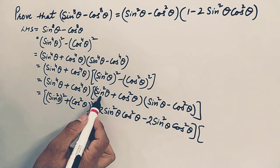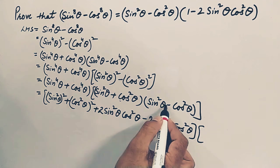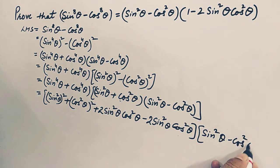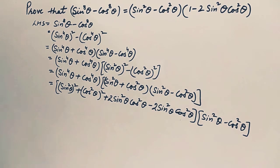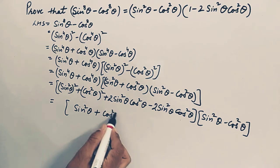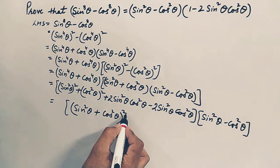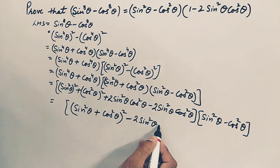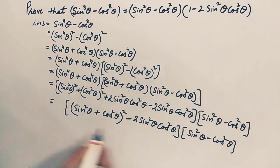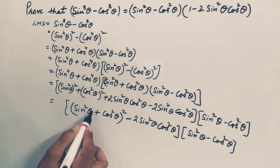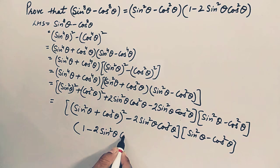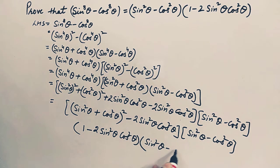Now the expression simplifies. The 1 into (sin²θ minus cos²θ) factor remains. The a² plus b² plus 2ab becomes (a + b)², which is (sin²θ plus cos²θ)² equals 1² equals 1. So the full expression becomes (1 minus 2sin²θcos²θ) into (sin²θ minus cos²θ).